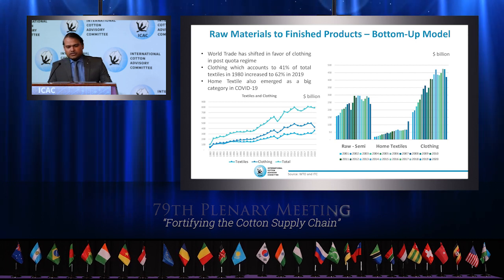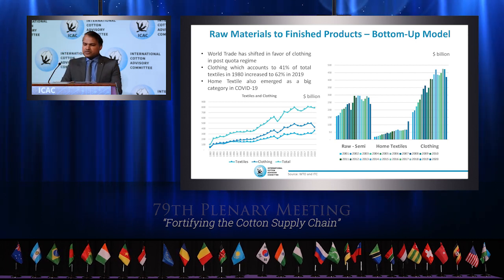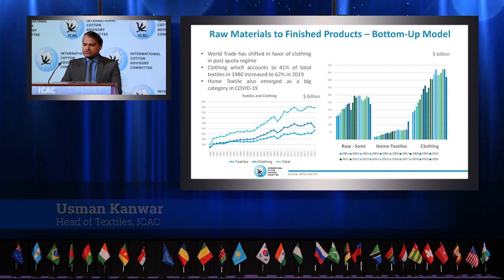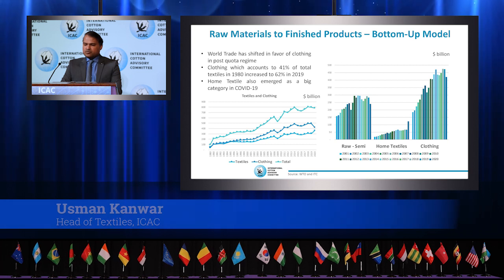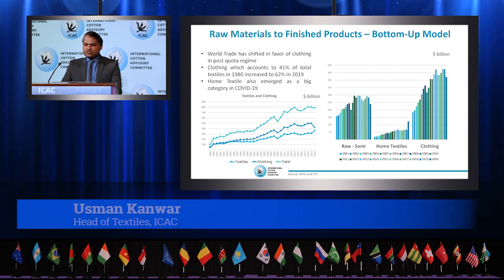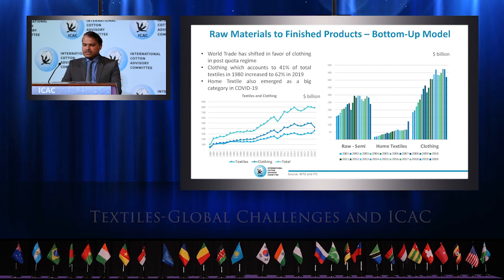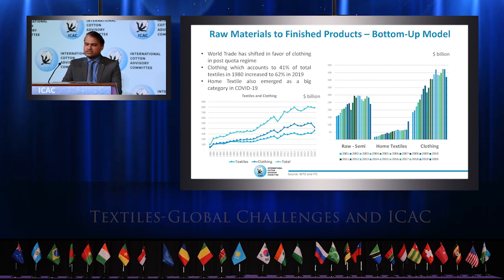In the post-quota regime, trade shifted from developed economies with high income to countries with low wages. This provided an opportunity for countries to import raw materials under temporary importation schemes and convert them into finished products, known as the downstream or bottom-up model. The success of this model lies in the fact that with minimum investment, countries achieved high value addition and generated massive jobs, further augmented by duty-free access and relaxed rules of origin in major importing countries.